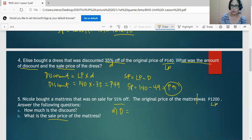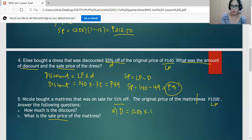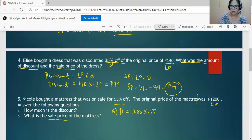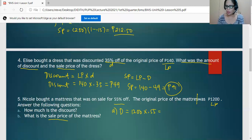D is equal to the list price, which is 1,200, times the discount rate 0.55. So we have 1,200 times 0.55, so we have 660 pesos as the discount.